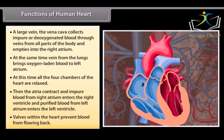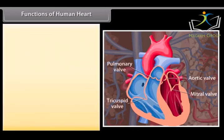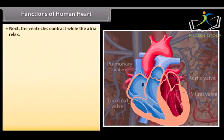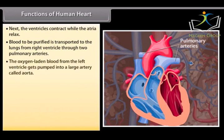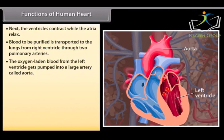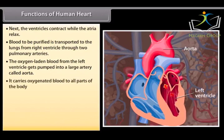Valves within the heart prevent blood from flowing back. Next, the ventricles contract while the atria relax. Blood to be purified is transported to the lungs from right ventricle through two pulmonary arteries. The oxygen-laden blood from the left ventricle gets pumped into a large artery called aorta. It carries oxygenated blood to all parts of the body.